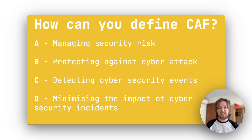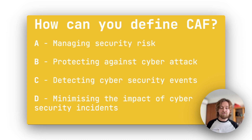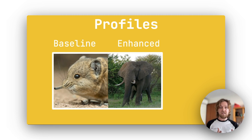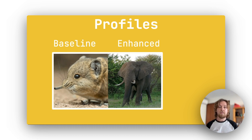Objective D is minimising the impact of incidents. It's about resilience and how well your services or your whole business can withstand and recover from an attack or a system being breached. CAF categorizes its guidelines into two profiles. The baseline is the foundational level, there to help you realise if you have any gaps in your security and to ensure that you're equipped to handle the most basic cyber threats.